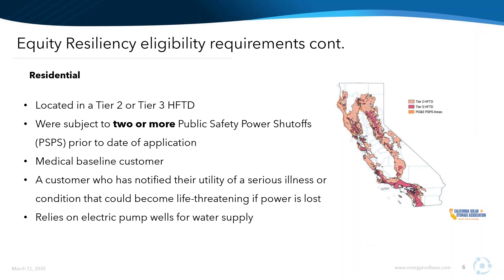We're also going to be publishing our own definitive guide to the updated SGIP program soon. At the end of the day, all of this isn't totally final — we're still expecting to possibly see some changes to the guidebook. Overall, the equity resiliency budget was put into place largely because of the increase in wildfires and public safety power shutoffs, which will lead to higher demand for home storage. With that, I'm going to pass things off to Kevin Mulvey from the Energy Toolbase team.